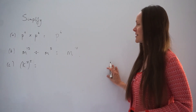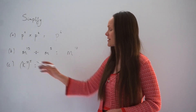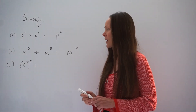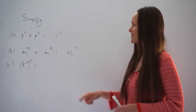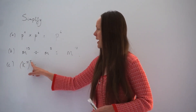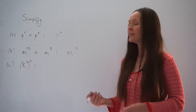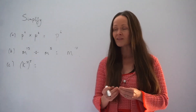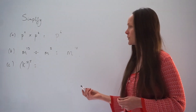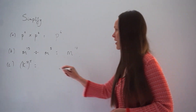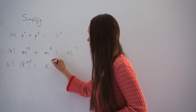Now onto part C, it says k cubed all raised to the power of 5. When we solve questions like this with brackets and the power outside the brackets, you need to multiply the powers. So 3 multiplied by 5 is 15, so the answer to C is k to the power of 15.